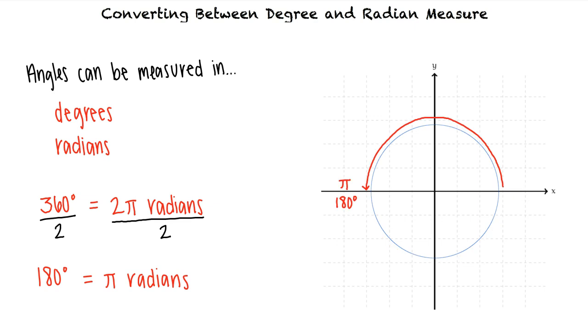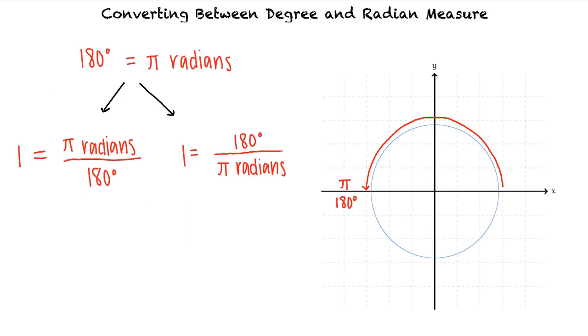Using this equality, we can create conversion factors that allow us to convert between degrees and radians. We see that 1 equals pi radians over 180 degrees, and 1 equals 180 degrees over pi radians.